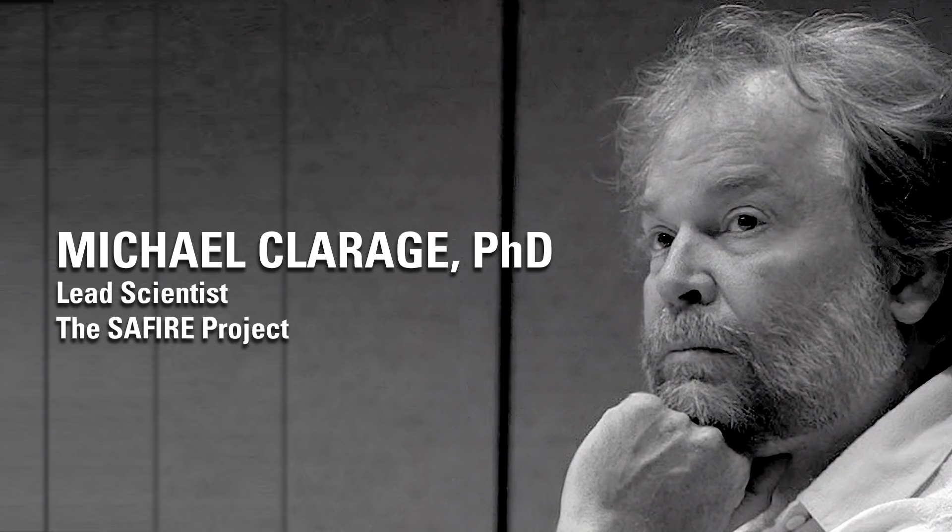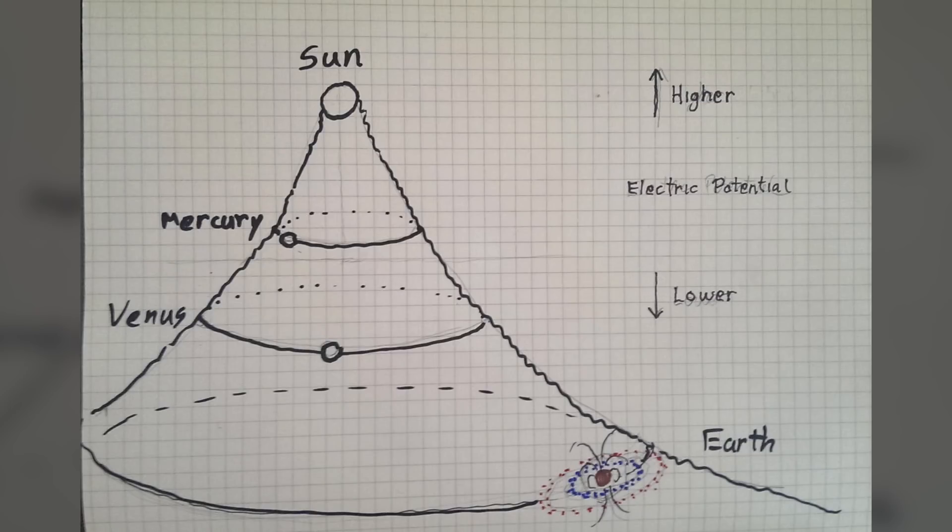We can step back more and we can see our earth in the same picture as our sun. I've drawn the sun and the first three planets with a third dimension. On my drawing, there is a hill leading up to the sun. This hill represents electrical activity.